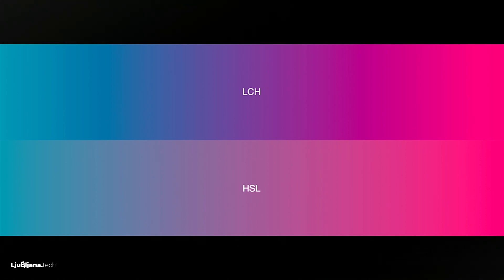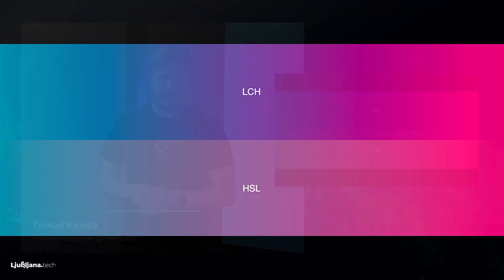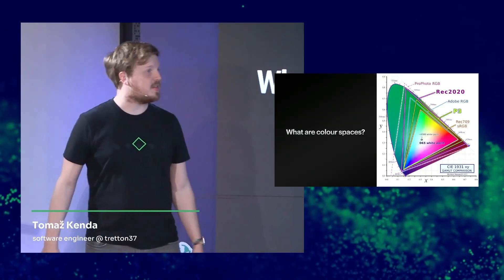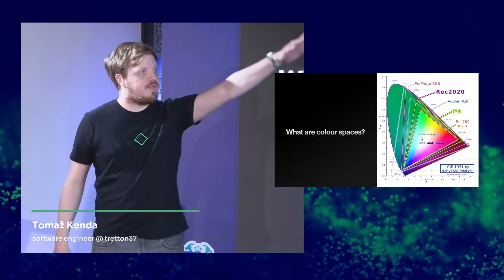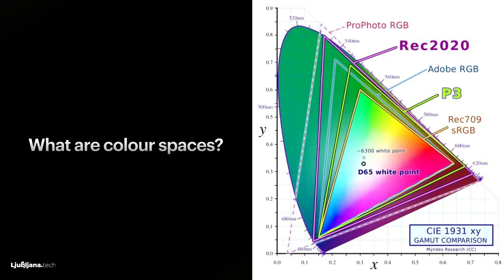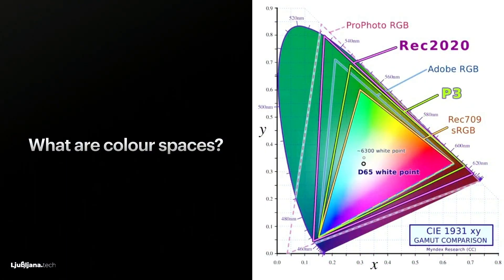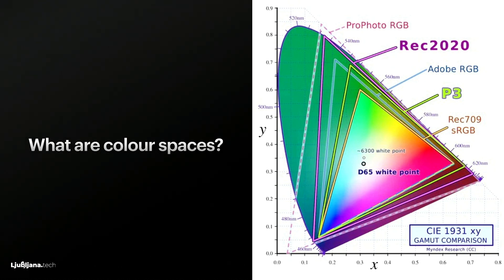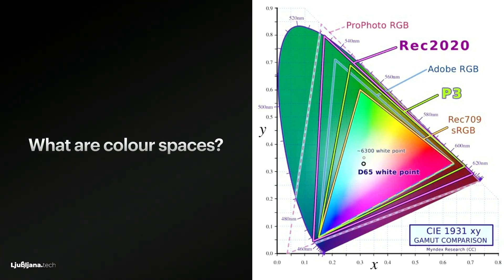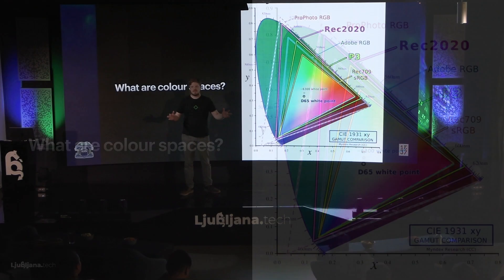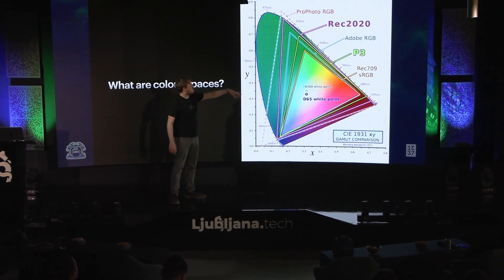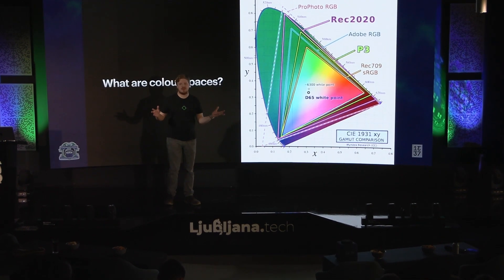I've been talking about color spaces and color gamuts, but what is this really? In general, we usually see a representation like a mapping of colors we can see, but our computers, displays, and phones cannot reproduce all of them. Most commonly we have the sRGB color space. Even if you go up to DCI-P3, we already cover roughly 30% more colors. And as you go up to Adobe RGB or Rec 2020, you get even more possible color reproduction.